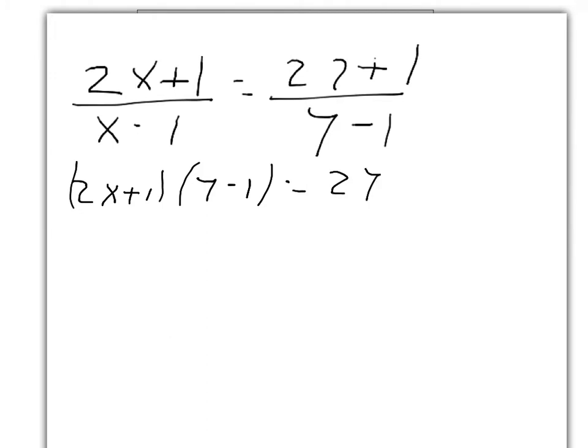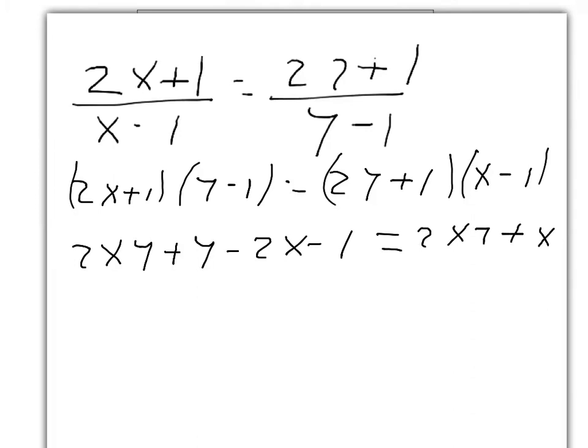So I'm just cross-multiplying those two expressions. And now open up the brackets. We get 2xy plus y minus 2x minus 1 equals 2xy plus x minus 2y minus 1. Now you'll notice the 2xy's cancel and the minus 1's cancel.